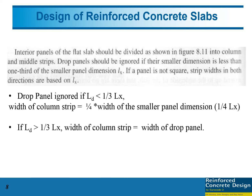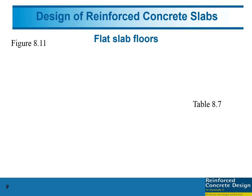The next step is to determine the width of the column strip. If the drop panel width (ld) is less than one-third of lx — where lx is the smaller panel dimension — then the width of the column strip equals one-quarter of lx. However, if ld is greater than or equal to one-third of lx, then the width of the column strip equals the width of the drop panel. This is shown in Figure 8.11.